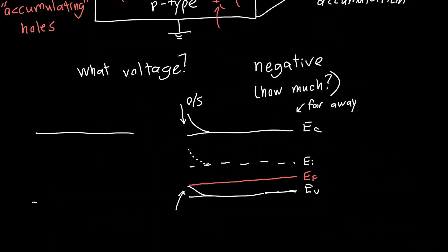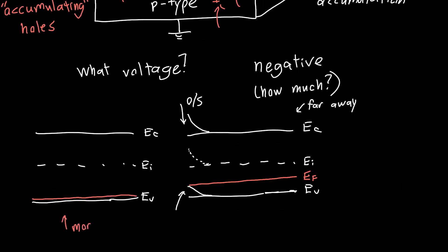If we draw what we want at the oxide-semiconductor interface: we've got our conduction band, our valence band, and our intrinsic Fermi energy. At the interface, we want the Fermi energy to be very close to the valence band, because this means we have more holes near the interface. I've zoomed in on this edge to give you this band diagram. The basic idea is that we want E_F to be much closer to the valence band energy, which means we have more holes in the semiconductor.